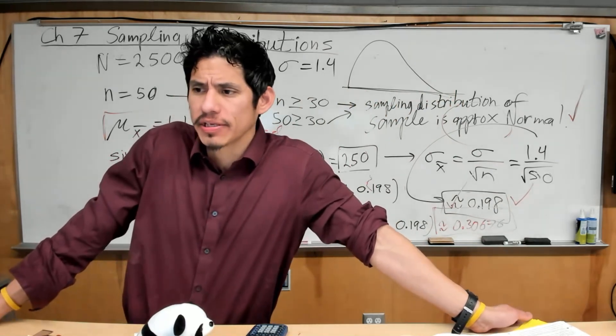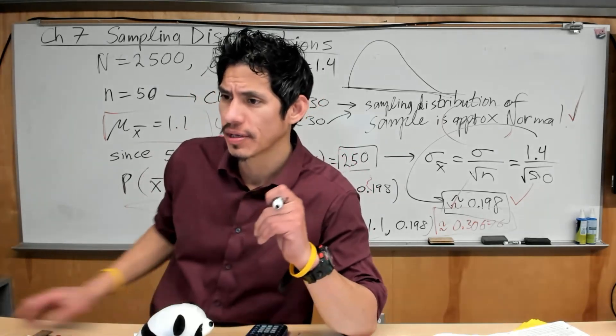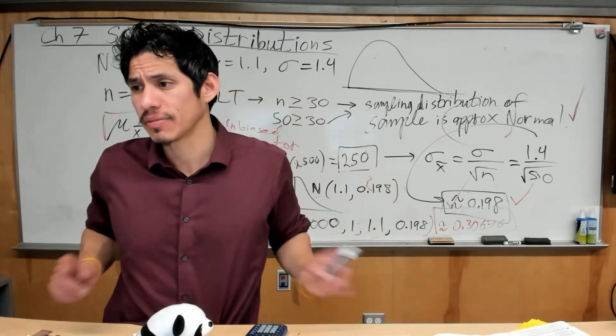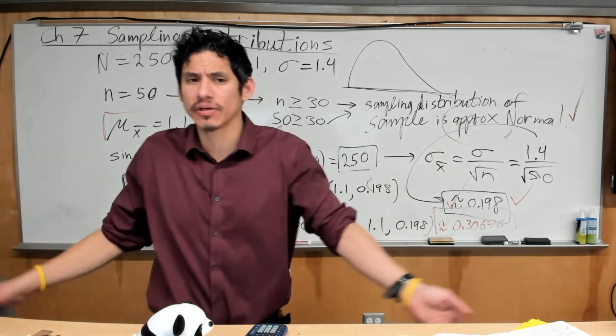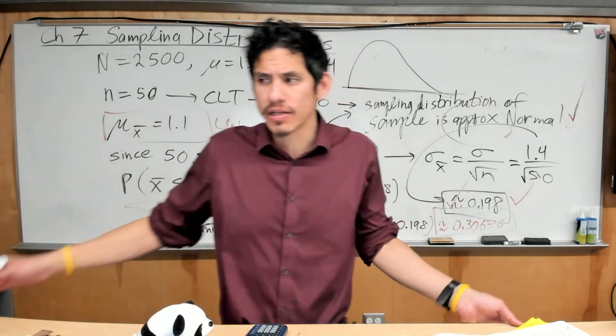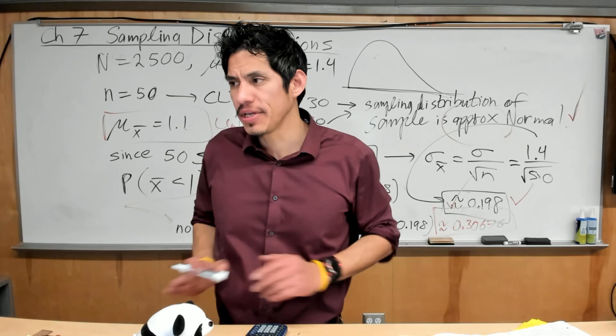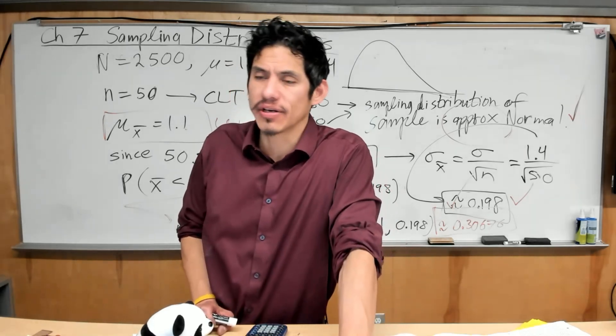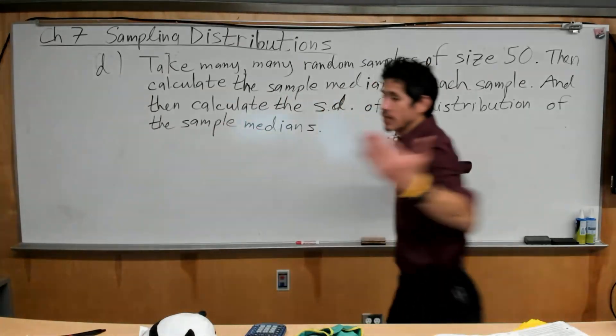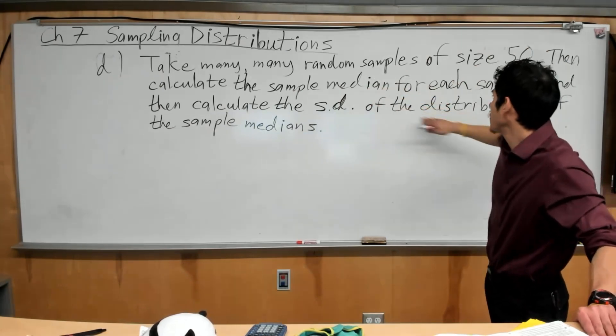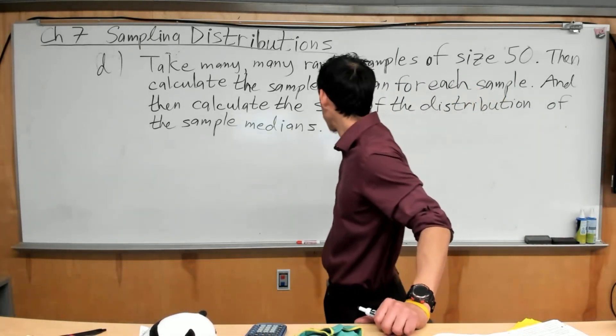All right, so because the population distribution is skewed, the principal is considering using the median number of absences last month instead of the mean number of absences to summarize the distribution. Describe how the principal could use simulation to estimate the standard deviation of the sampling distribution of the sample median for random samples of size 50. Okay, so don't overthink this. When you're doing simulations, you just want to do a lot of them. So you're going to basically take many, many random samples of size 50, and for each one calculate the sample median, and then calculate the standard deviation of those sample medians. And here we go. Take many, many random samples of size 50, then calculate the sample median for each sample, and then calculate the standard deviation of the distribution of the sample medians. So just the same thing as usual.